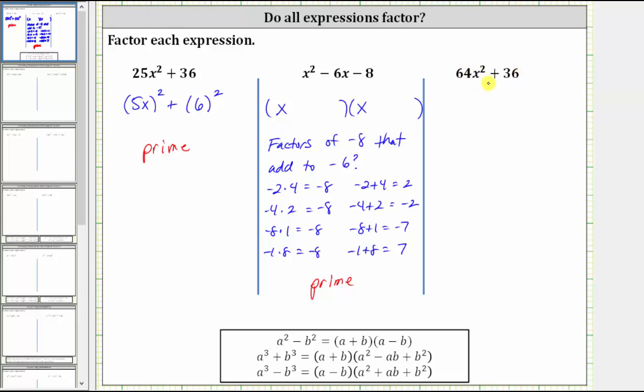If it's helpful, we could rewrite this as four times 16x squared plus four times nine, just to see the greatest common factor of four. So the first step is to factor out the four. So this expression does factor. Once we factor out four, we're left with 16x squared plus nine.